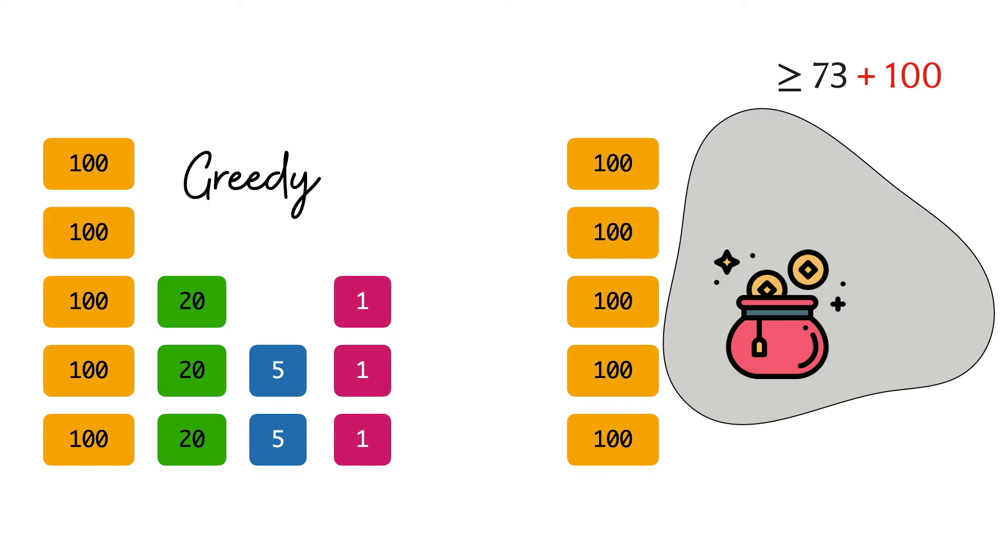Now of course we have done this with some specific numbers and in a slightly specific way, assuming that the optimal differs from the greedy in the number of hundred dollar bills that it uses and it differs by exactly one, but hopefully even this specialized limited argument gives you a sense of why the greedy algorithm may be expected to be correct. Now you could take pen and paper and try to write out this argument in its full generality and really try and appreciate where the divisibility property comes into play when you argue the correctness.